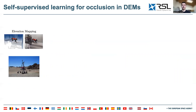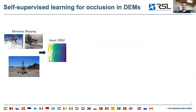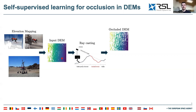We consider elevation maps generated by all kinds of mobile robots, such as legged robots or planetary robots. Conventional elevation mapping strategies generate partially occluded 2.5D DEMs. We randomly sample a vantage point and perform raycasting — checking for every grid cell whether it is visible from the vantage point — leading to an even more occluded DEM with a corresponding binary occlusion mask.